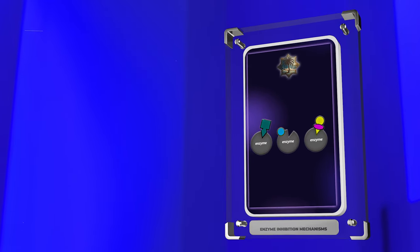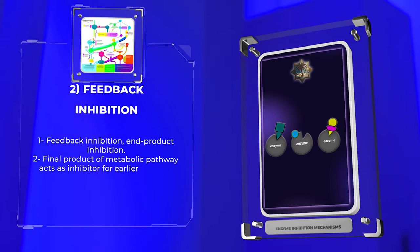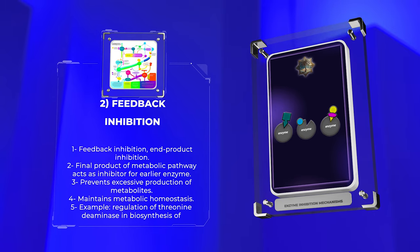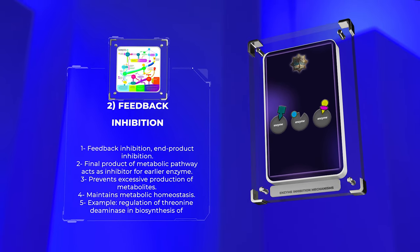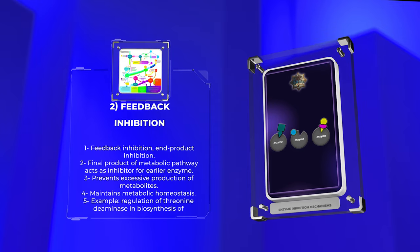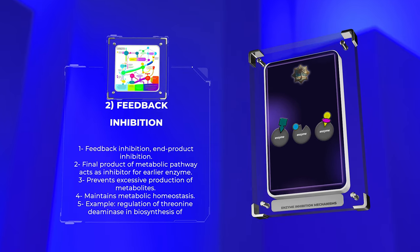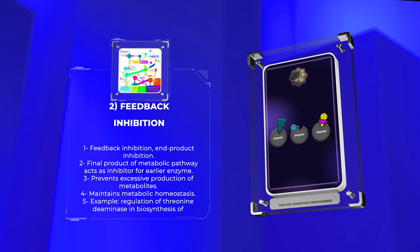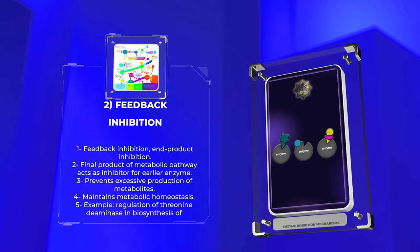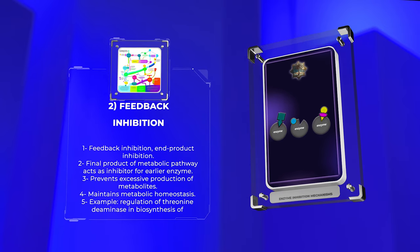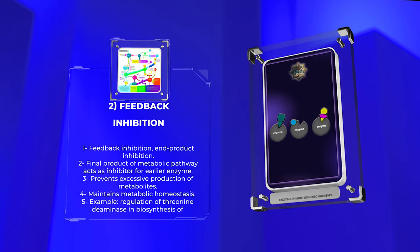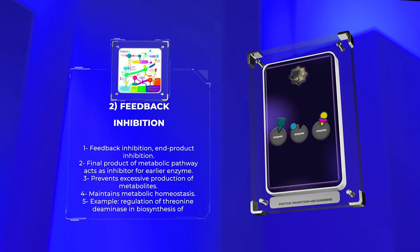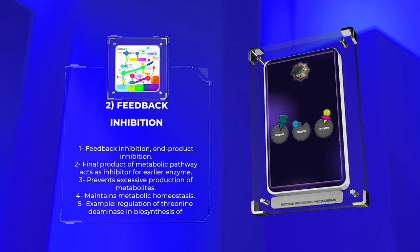Feedback inhibition, also known as end-product inhibition, is a regulatory mechanism wherein the final product of a metabolic pathway acts as an inhibitor for an earlier enzyme in the pathway. This mechanism ensures that excessive production of metabolites is prevented and maintains metabolic homeostasis. Through feedback inhibition, the end-product binds to the allosteric site of the first enzyme in the pathway, causing a shape change that inhibits enzymatic activity. This negative feedback loop helps regulate the flux of metabolites and control overall metabolic rate. An illustrative example is the regulation of the enzyme threonine deaminase in the biosynthesis of isoleucine.